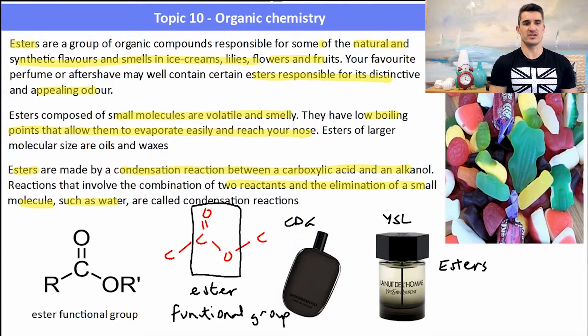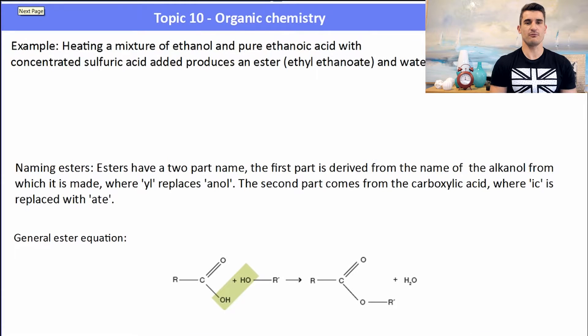So how can we produce an ester? Well, here's an example. If we heat a mixture of ethanol and ethanoic acid in the presence of a concentrated sulfuric acid catalyst, we produce an ester called ethyl ethanoate and water.